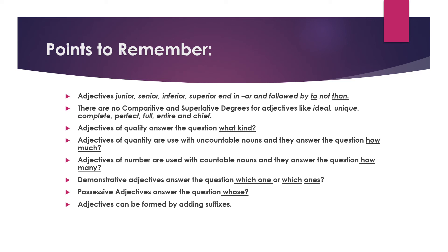Some important points to remember: adjectives junior, senior, inferior, superior end in '-or' and are followed by 'to,' not 'than.' There are no comparative and superlative degrees for adjectives like ideal, unique, complete, perfect, full, entire, and chief.